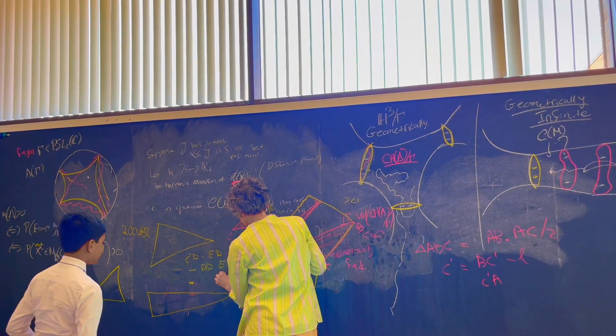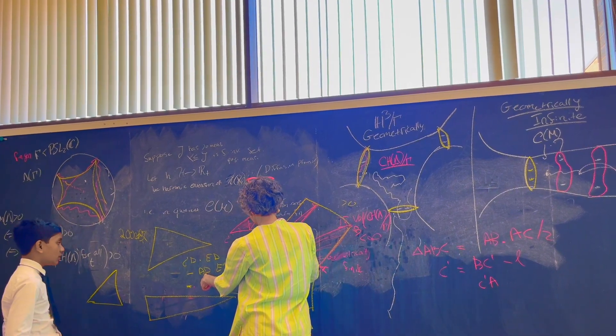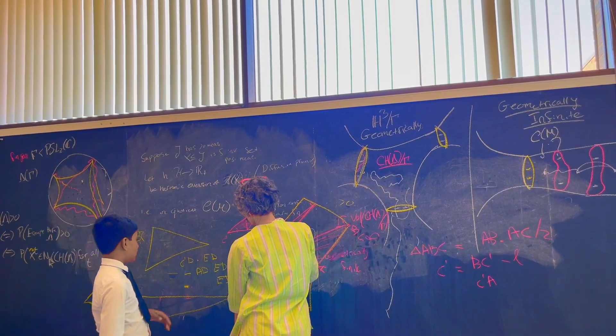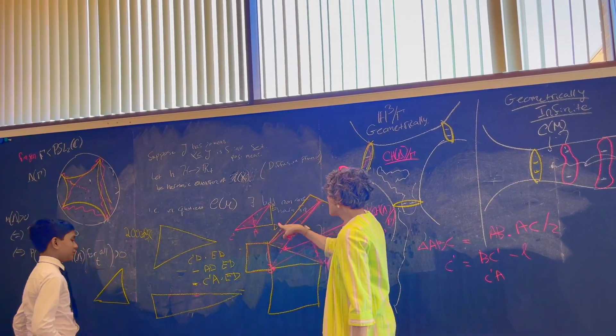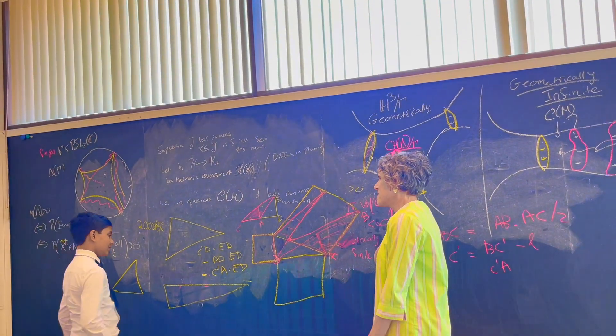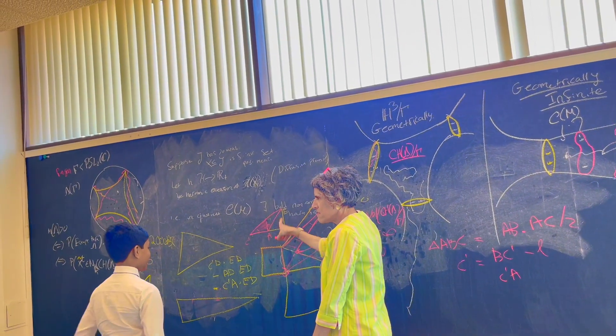And this is ED times what? C prime D minus AD. C, but what is that length? C prime D minus AD. Oh, that's C prime A. And then. So, now you know how to compute the area of a obtuse triangle. Yeah, and then you just divide this by two.